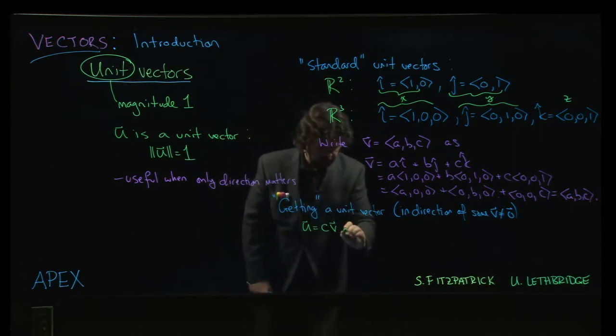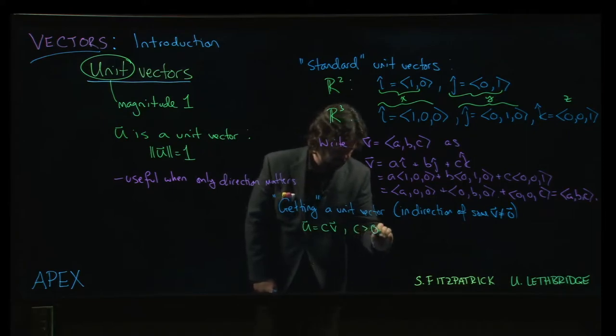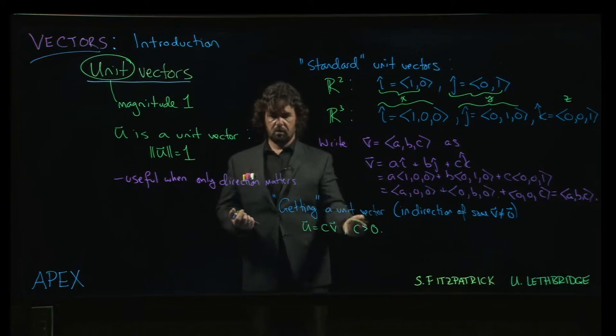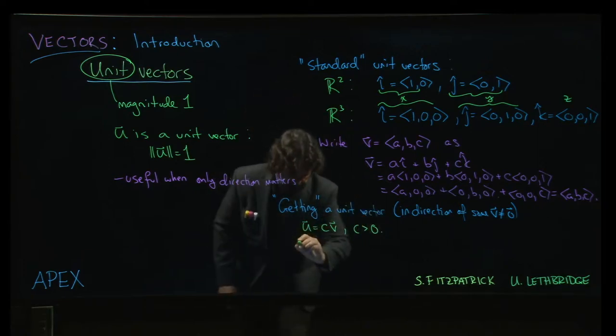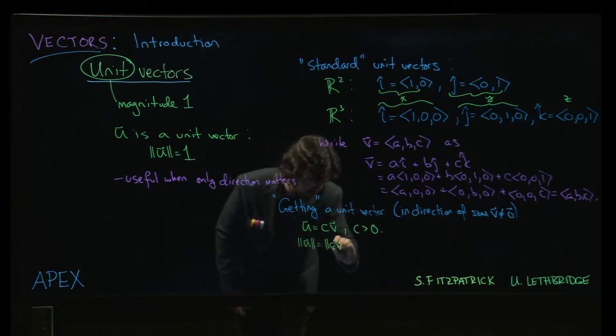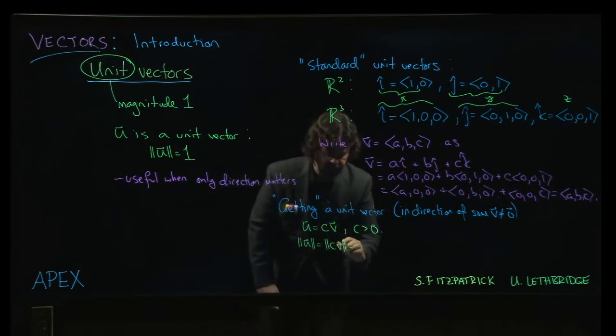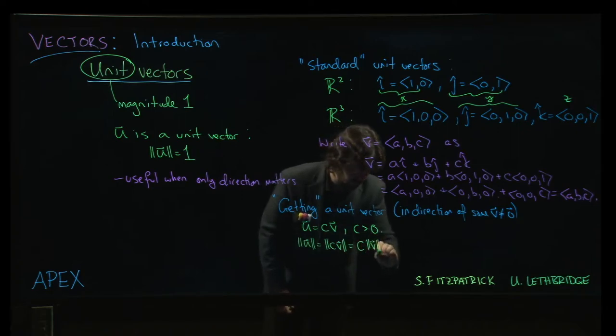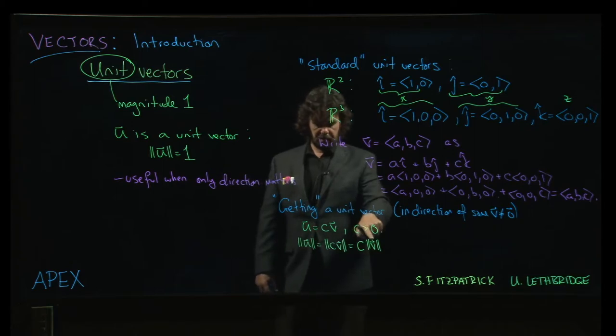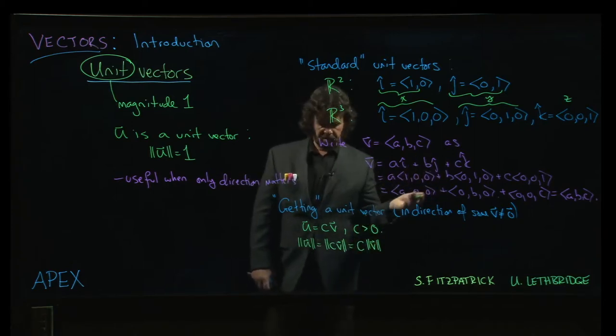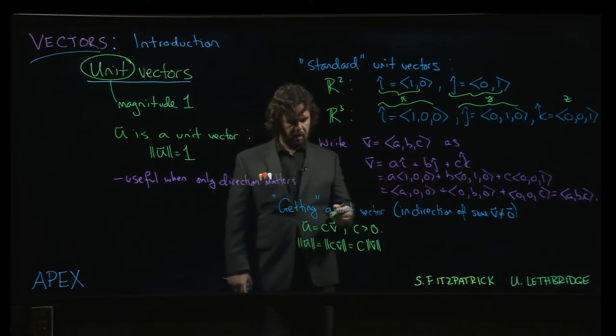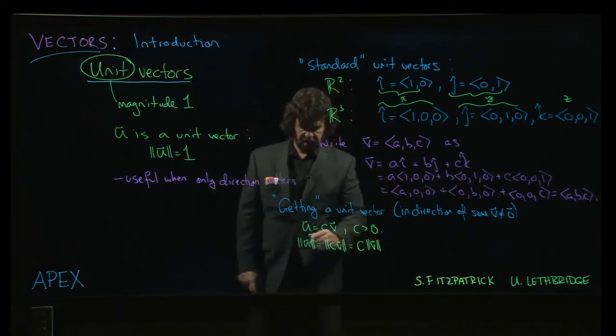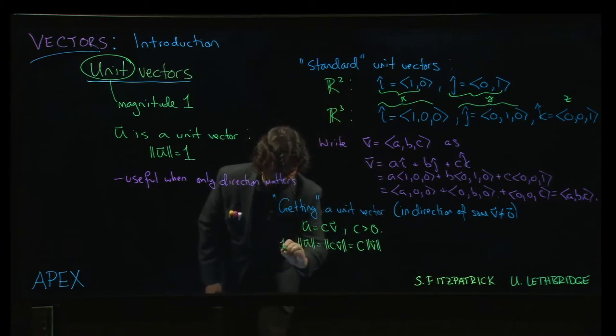And same direction—I don't want it to be opposite, so we'll require that this scalar c be bigger than 0. So imagine that I have some vector u, which is a multiple of the vector v. Well, then I know that the magnitude of u should be the magnitude of c times v. And we saw in a previous video that that's the same thing as the absolute value of c, but that's just c, because c is positive, times the magnitude of v. Without the requirement that c is bigger than 0, we'd need absolute values there, but we know that c is positive, so we don't need the absolute value. And we also want the magnitude of u—we want it to be a unit vector, so we want this magnitude to be 1.